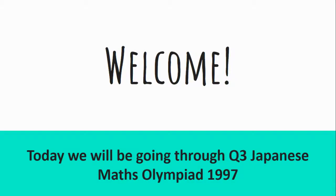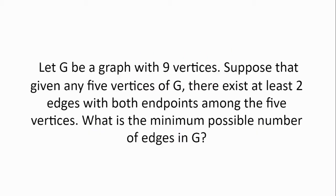Welcome. Today we'll be going through question 3 from the Japanese Maths Olympiad, 1997. Let G be a graph with 9 vertices. Suppose that given any 5 vertices of G, there exist at least 2 edges with both endpoints among the 5 vertices. What is the minimum possible number of edges in G?